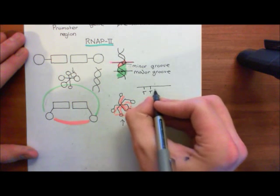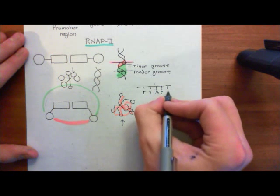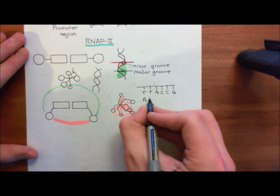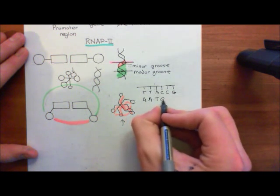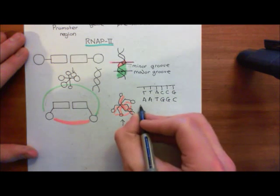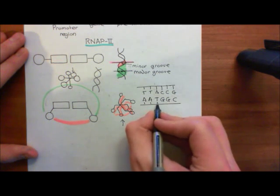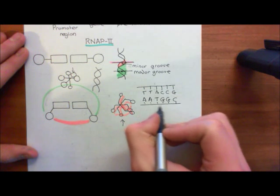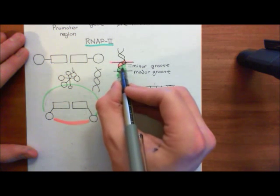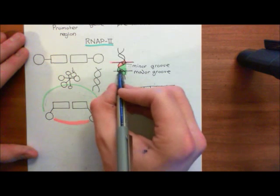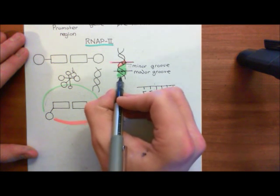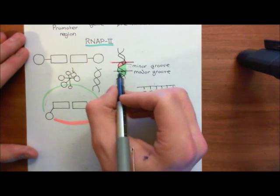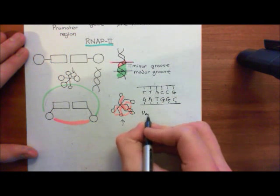For example, you might have to have the specific sequence T-T-A-C-C-G, with the complementary strand A-A-T-G-G-C. The transcription factors must therefore be interacting with the organic bases in the section of DNA that they interact with. The way that they bind to the DNA is generally through hydrogen bonds and also hydrophobic interactions.